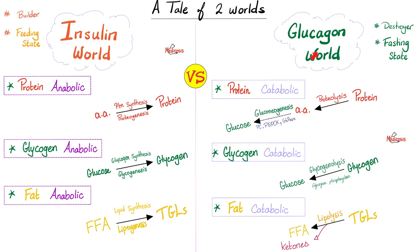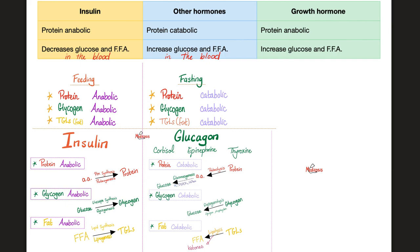Understand the difference: glucagon helps release ketone bodies. However, insulin is never pro-ketosis — insulin is the major, if not the only, anti-ketogenic hormone in your body. It does not release ketone bodies, unlike glucagon and the rest of the doofuses. Under insulin guidance, proteins, glucose, and free fatty acids are being built up and stored inside cells in big form — not circulating in the blood.